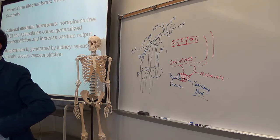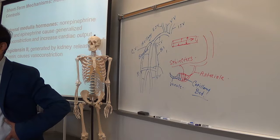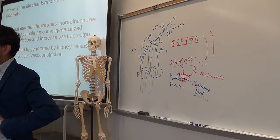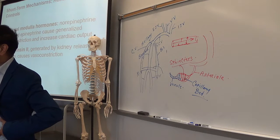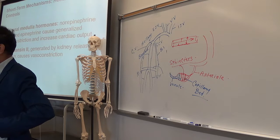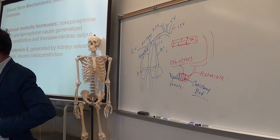Renin comes from the kidneys. Remember that? And then ACE, angiotensin converting enzyme, comes from the lung and liver.